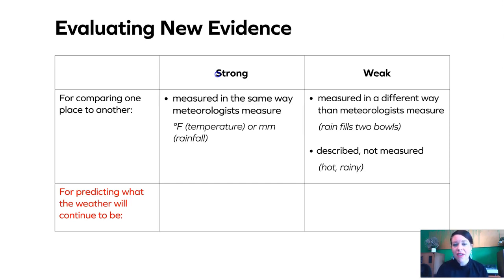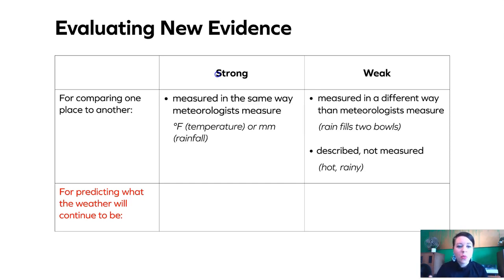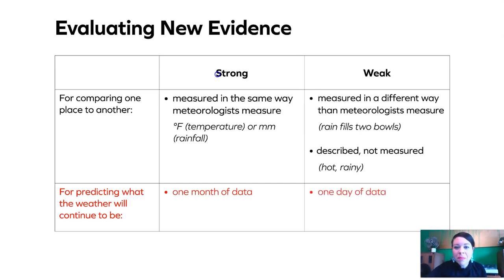We also don't want evidence that's just a description. It's not strong evidence to say 'it's really hot and rainy outside today' — that's not an actual measurement. Then in chapter two, we were predicting what the weather will continue to be, and you decided with scientist Cynthia that a strong piece of evidence would be a month of data because it gives a bigger time span, while one day of data is weak — it's just not enough to predict the future.